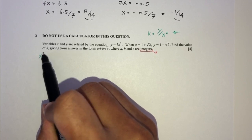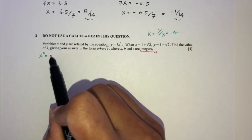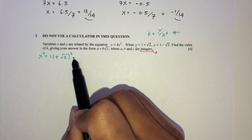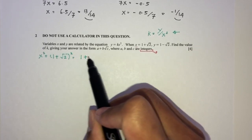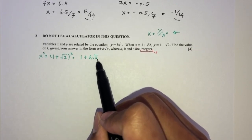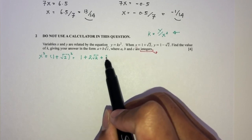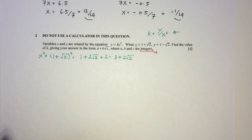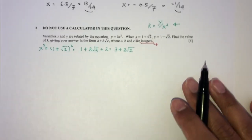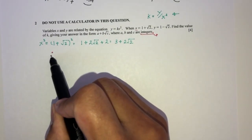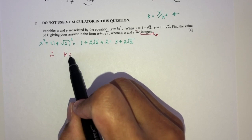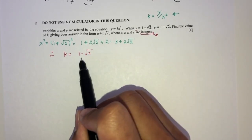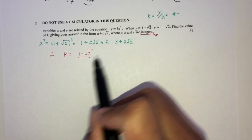x squared will be 1 plus root 2, all squared. That will be 1 plus 2 root 2 plus 2, which is 3 plus 2 root 2. So from what we can see, k is equal to y over x squared, which is 1 minus root 2 divided by 3 plus 2 root 2.